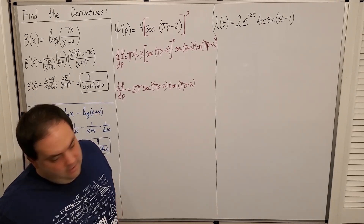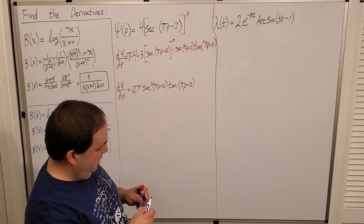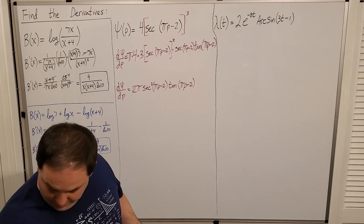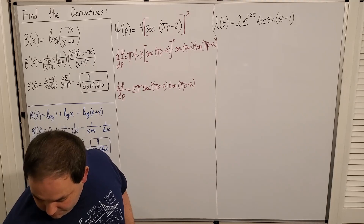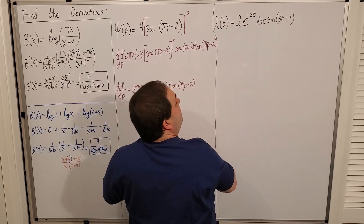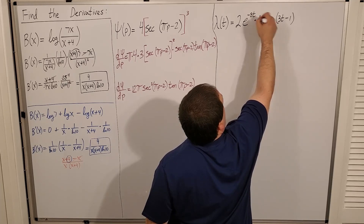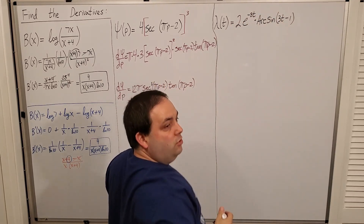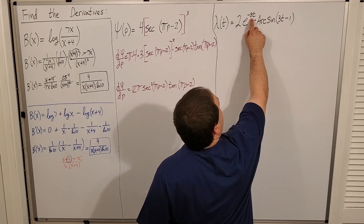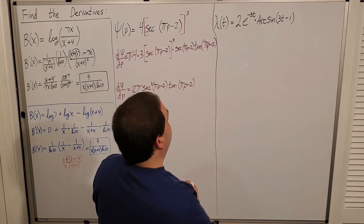Lastly for this section: λ(t) equals 2e^(−8t) times arcsin(3t minus 1). Notice right away this is a product — one function times another function — so the overall structure is a product rule. However, there's also a chain rule inside each piece: the −8t will have its own derivative and the (3t minus 1) will have its own derivative as well.